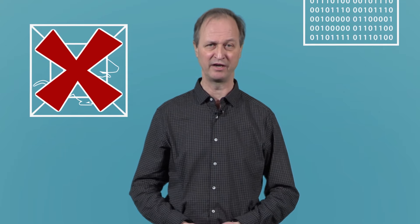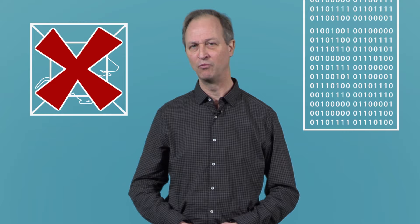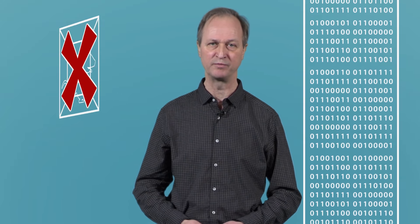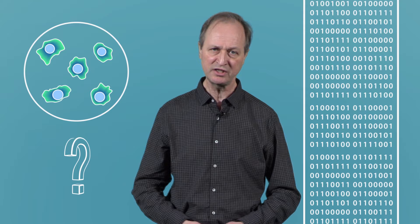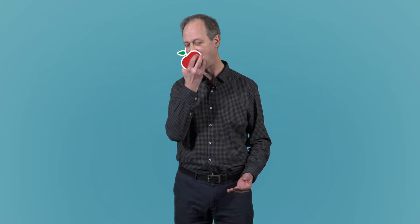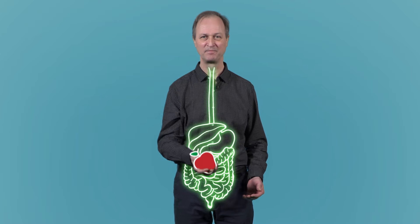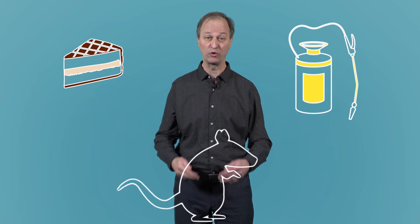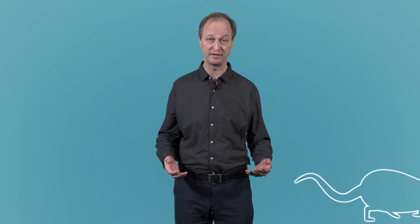But can we do risk assessment without animal data? More complex effects are still difficult to predict from cell culture experiments, such as what happens to chemicals in our body after we eat them. And that's why, in some areas such as pesticides and food additive authorization, the law requires that we look at animal data.